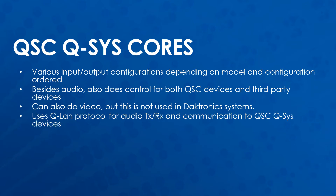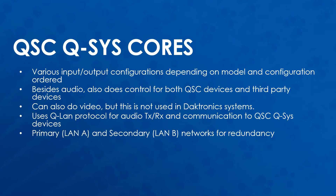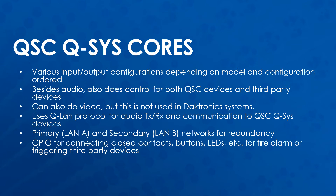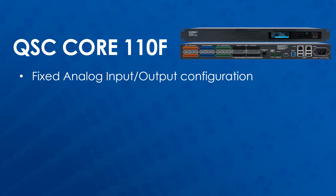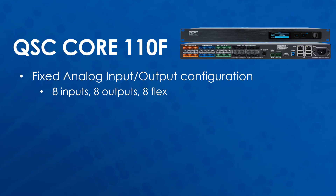The cores use QSC's QLAN protocol for audio transmission and communication to QSC Q-SYS devices. The cores have primary and secondary networks for a redundant setup in case one network goes down. Cores also have GPIO, which stands for General Purpose Input and Output, for connecting things like closed contacts, buttons, LEDs, fire alarm integration, or providing a trigger to a third-party device. The Core 110F has a fixed analog input and output configuration consisting of eight inputs, eight outputs, and eight flex connections. The flex connections can be set individually to either be an input or an output in software to provide more flexibility.